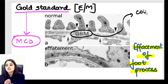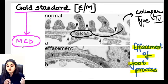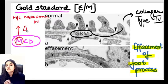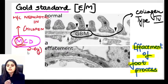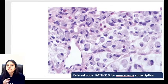Minimal change disease — nephrotic or nephritic? It's the most common nephrotic syndrome in childhood. The age group is typically 2 to 6 years. If you get a child with nephrotic syndrome, the first diagnosis in mind should be MCD.